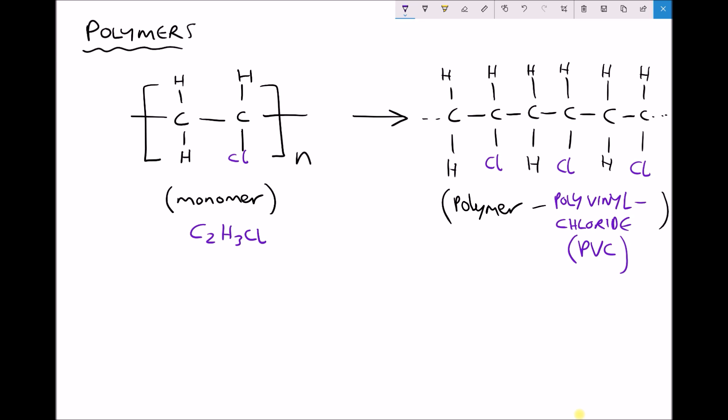This particular polymer is called polyvinyl chloride, more commonly known as PVC. So once again we see the repeating units except this time we see a chlorine atom attached to every alternative carbon atom. So that's PVC, polyvinyl chloride.